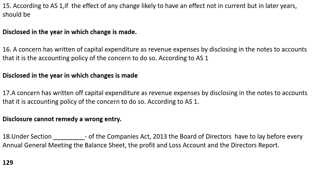A concern has written off capital expenditure as revenue expenses by disclosing in the notes to accounts that it is the accounting policy of the concern to do so. According to Accounting Standard 1, this disclosure cannot correct a wrong entry. So, a wrong entry cannot be validated merely by disclosure.